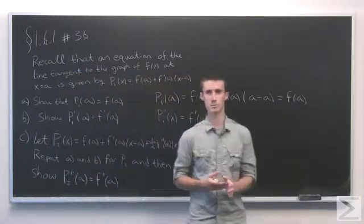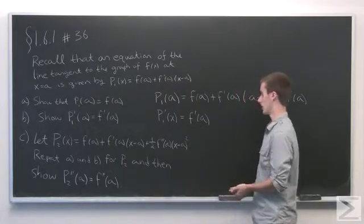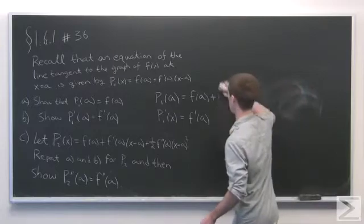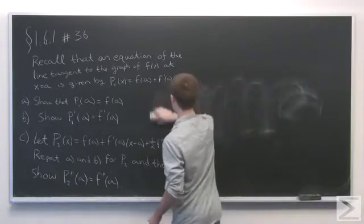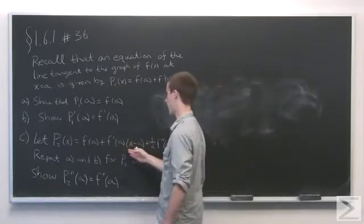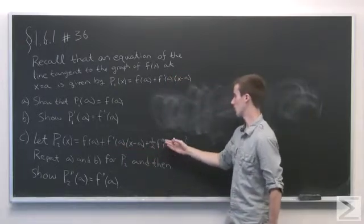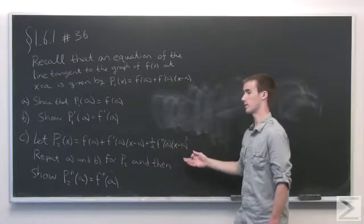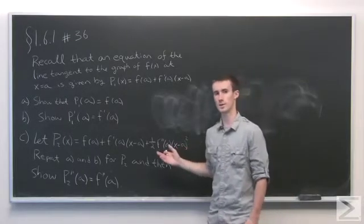Now, this is a pretty good approximation, but it turns out we can actually do a little bit better. So if we define p2 to be something similar, by taking essentially the equation that we already had, and then adding on this extra term, (1/2)f''(a)(x - a)².